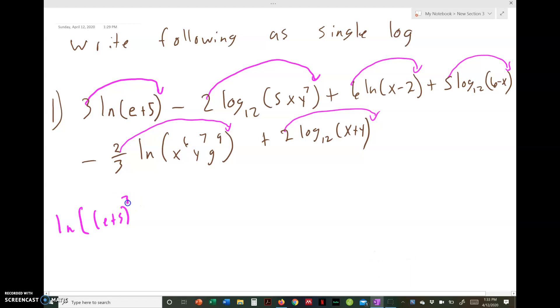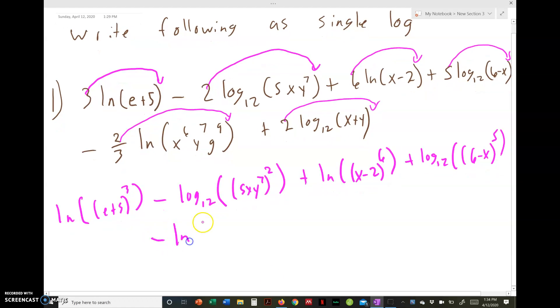So this becomes ln of (e+5)^3. Remember we have to put that (e+5)^3 inside the parenthesis because we're taking the natural log of that whole thing. Minus log base 12 of (5xy^7)^2, plus ln of (x-2)^6, plus log base 12 of (6-x)^5, minus ln of (x^6 y^7 g^9)^(2/3), plus log base 12 of (x+y)^2.